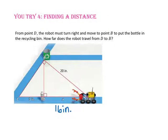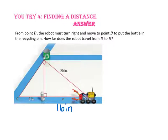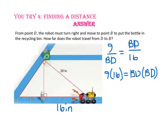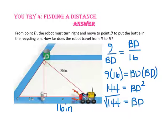Pause the video and do you try number 4. From point D, the robot must turn right and move to point B. Since X equals 16 inches and segment BD is the altitude, we can use segment BD as the geometric mean of segment DC and segment DA, using 16 as the length of segment DA. Using cross products: 9 times 16 equals the length of segment BD squared, so 144 equals BD squared. Taking the square root of both sides, BD equals 12 inches.